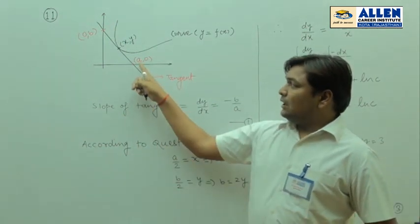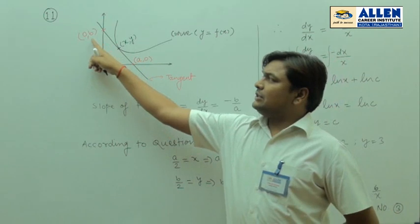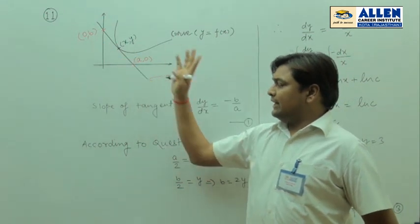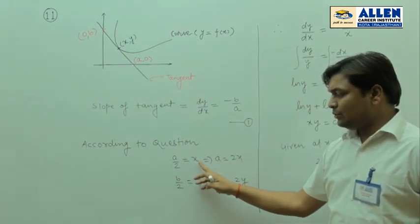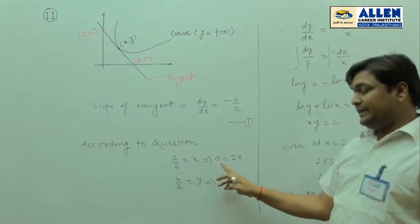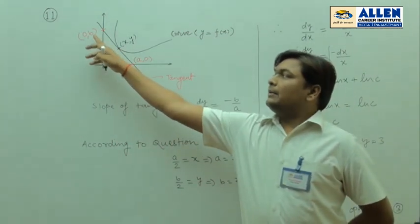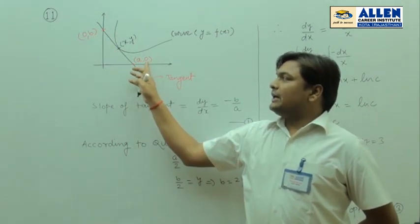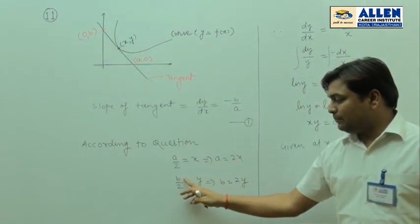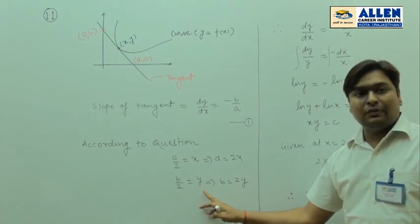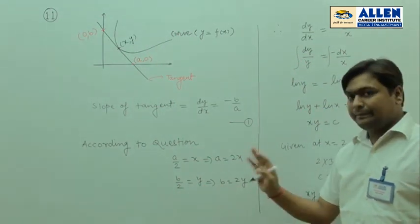Therefore, (a + 0)/2 = x, so a/2 = x, giving us a = 2x. And (b + 0)/2 = y, so b/2 = y, giving us b = 2y.